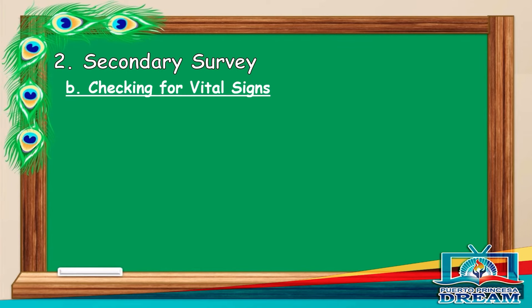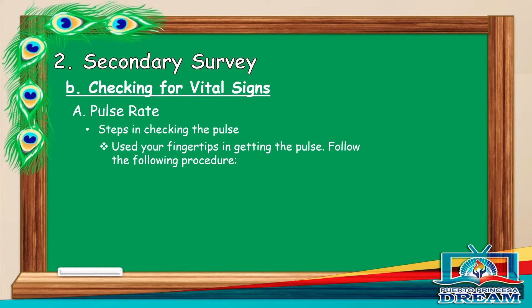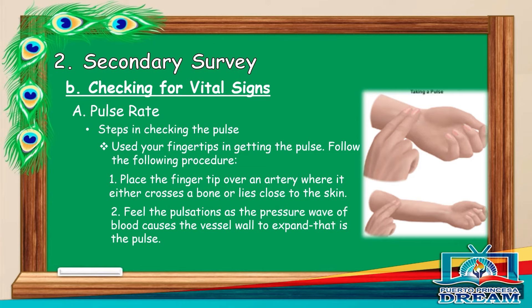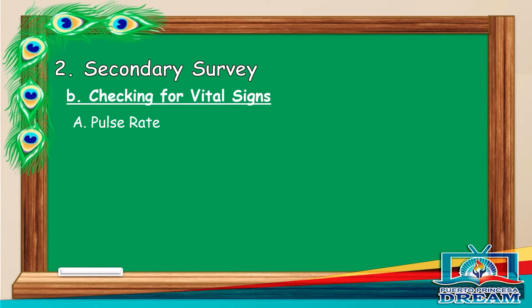Checking for vital signs. Pulse rate. Steps in checking the pulse: use your fingertips in getting the pulse. Place the fingertip over an artery where it either crosses a bone or lies close to the skin. Feel the pulsations as the pressure wave of blood causes the vessel wall to expand — that is the pulse.